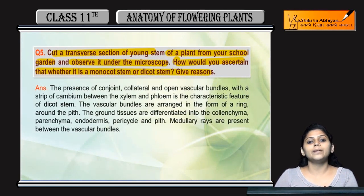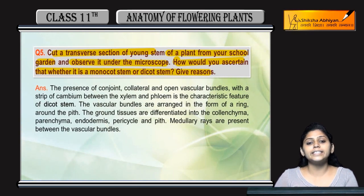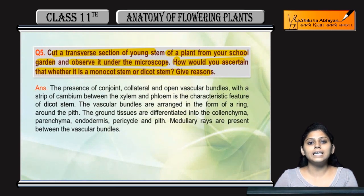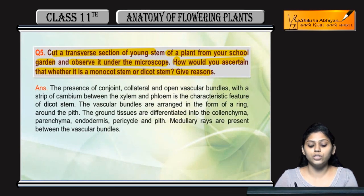We have studied in the chapter what is present in a monocot stem. The vascular bundle is scattered, but in the case of a dicot stem, it is properly arranged with differentiated ground tissue.